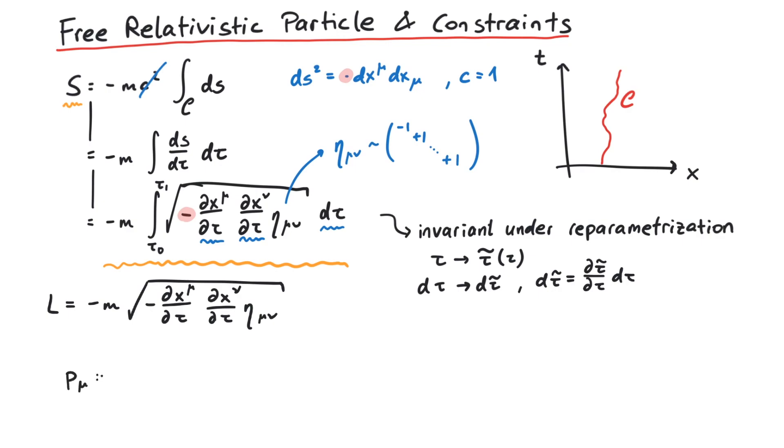The conjugated momentum is defined as the derivative of the Lagrangian with respect to the time derivative of a coordinate. Since we have d coordinates summarized in x mu, we will also get d conjugated momenta.